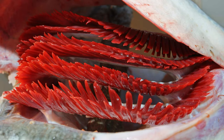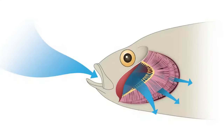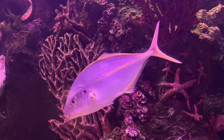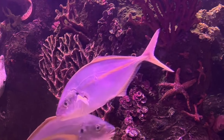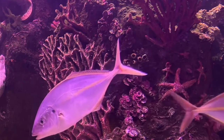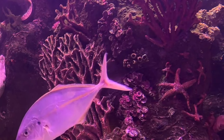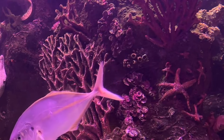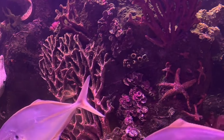Saltwater fish possess specialized organs known as gills, which act as their lifelines. These gills enable them to efficiently extract oxygen from the surrounding seawater. Additionally, their gills play a crucial role in filtering out excess salt, enabling them to thrive in the saline depths of the ocean.